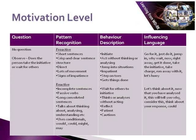You'll recognise proactive people from the short sentences they use, the crisp and clear sentence structure, and because they are direct and tend to have lots of movement and will easily show signs of impatience. If you want to influence and create rapport with a proactive person, you'll want to use language like: just go for it, just do it, let's jump in and get on with it, why wait, do it now, right away, get it done, take the initiative, take charge, run away with it, let's hurry.